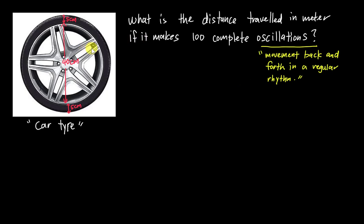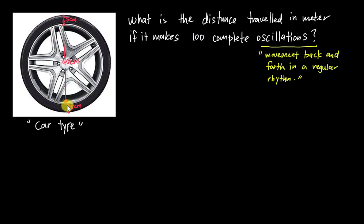This is a circular measure question — it's a bit unusual so I decided to make a short video for it. The question asks: what distance is traveled in meters if it makes 100 complete oscillations? According to the dictionary, the definition of oscillation is the movement back and forth in a regular rhythm. So basically it means the tire is going to rotate 100 times.